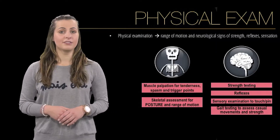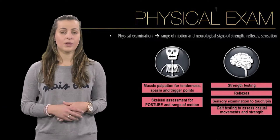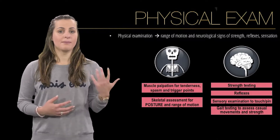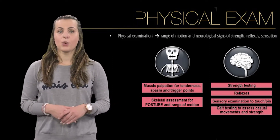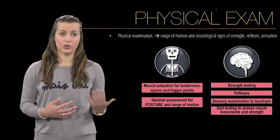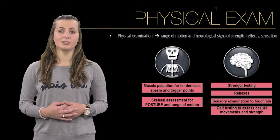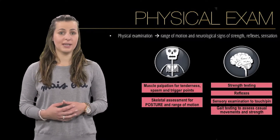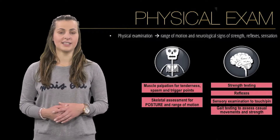The examination should be divided into musculoskeletal and neurological components. The MSK evaluation looks for muscle palpation for tenderness, spasm or trigger points, and skeletal assessment for posture and range of motion — both active and passive. The neurological examination can then be subdivided into strength testing, reflexes, sensory examination of touch and pin-prick through dermatome testing, as well as gait testing which will assess casual movements and strength.